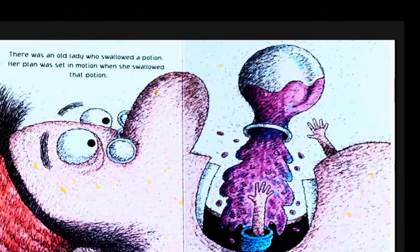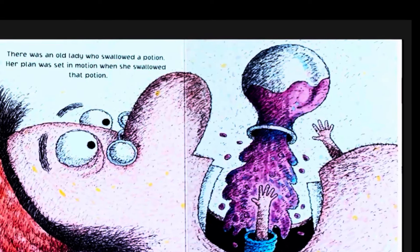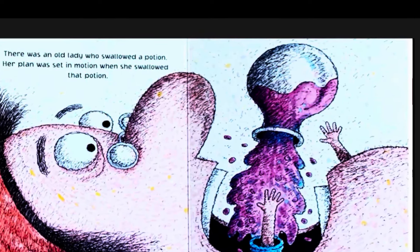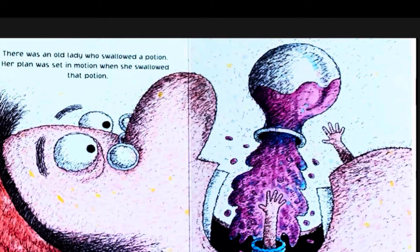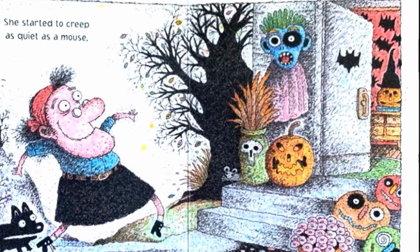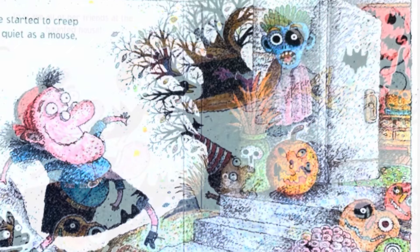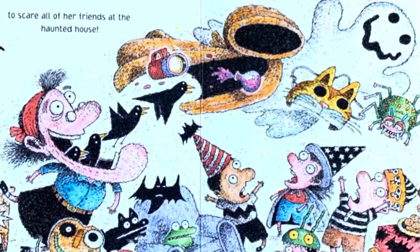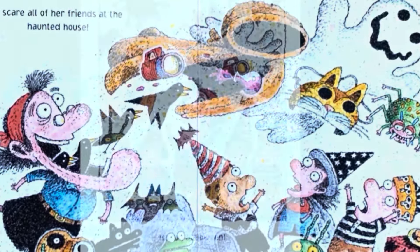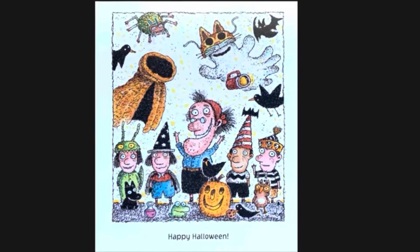There was an old lady who swallowed a potion. Her plan was set in motion when she swallowed that potion. She started to creep as quiet as a mouse to scare all of her friends at the haunted house. Happy Halloween! The end.